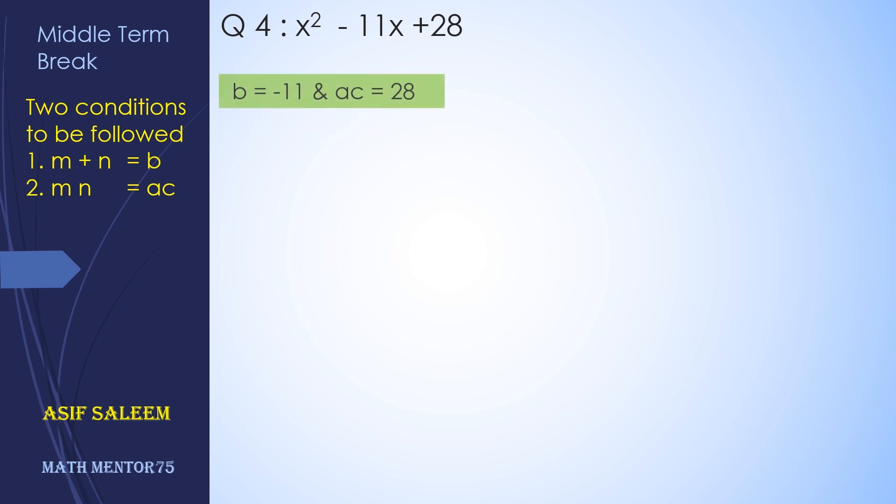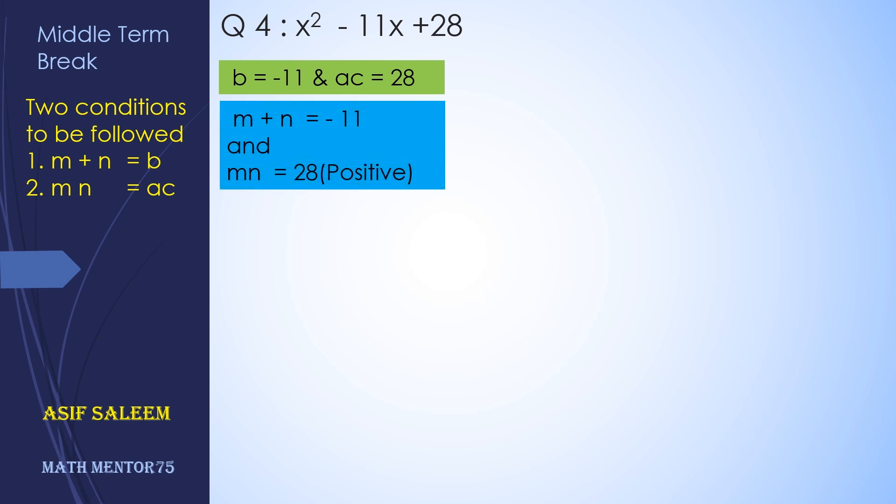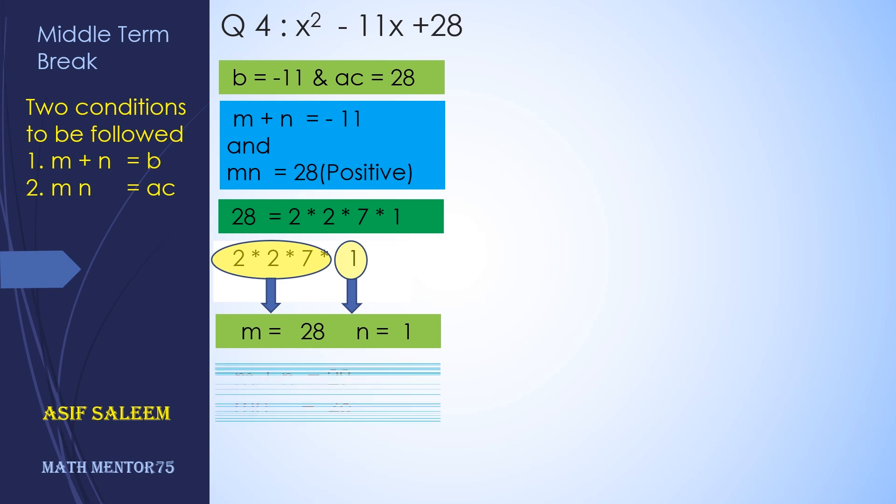Again, one more example. Here, this time b is minus 11 and the product of ac is 28. Now m + n should be minus 11 and mn should be 28 positive. It means the two numbers should have the same sign. Now let's group them. First we have the group of the first three and the last one, so m is 28 and n is 1, but this is not fulfilling our condition. M + n should be minus 11, so this is not the right choice.